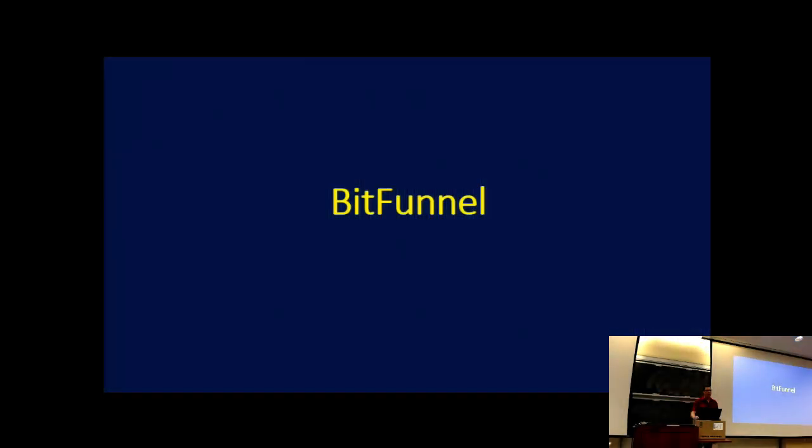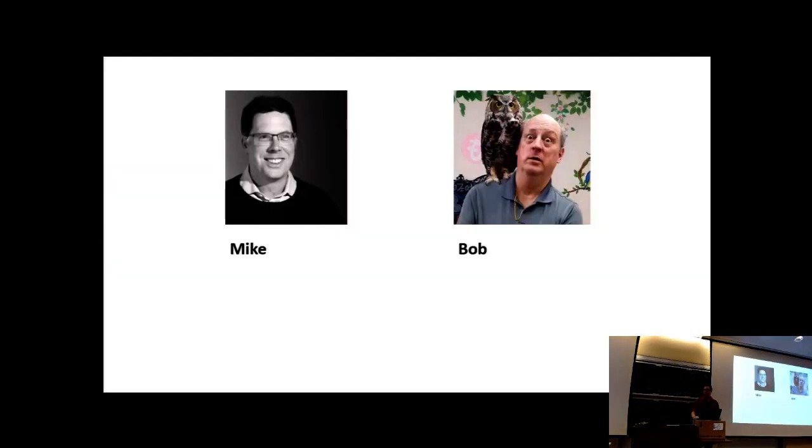So this takes us to BitFunnel. At this point, I should introduce the next character in our saga, my partner in crime, Bob Goodwin. There's a question about real-time updates? Skip lists seem real-time updatable even if you're keeping track of the deltas at every level. You can, but you can't do it lock-free while you've got 16 other threads doing queries and things like that. And it's a bunch more operations. So when I circle back to the end, I'll show how the operation in BitFunnel to update it is just a trivial one.